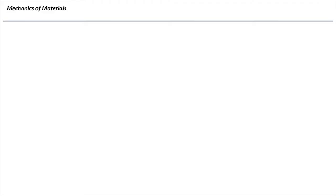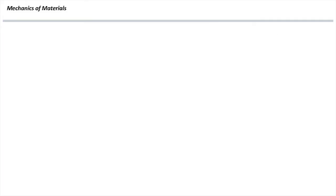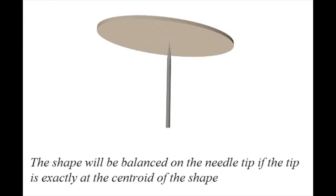First of all, I want to talk about the centroid of a section. Say we have an arbitrary shape and we want to determine where the centroid of the section is. Centroid of a shape is a point where the area is evenly distributed around that point. If we assume that mass is distributed evenly on the shape and put a needle at the centroid, the shape will have equilibrium and stay balanced around that needle. That's physically the definition of the centroid.